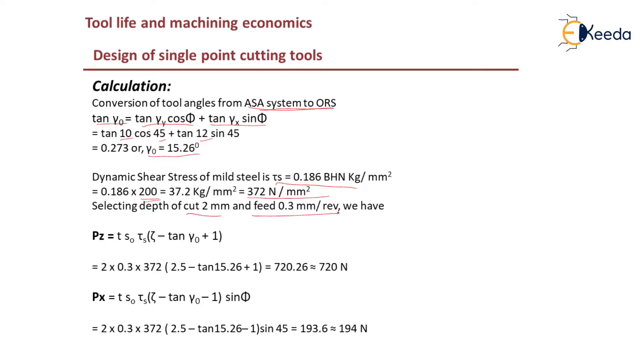Selecting depth of cut 2 mm and feed 0.3 mm per revolution, we have Pz equals t times s naught tau s times chip reduction coefficient minus tan gamma naught plus 1. If you substitute, which will give you around 720 Newtons.